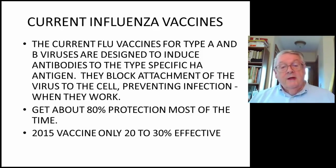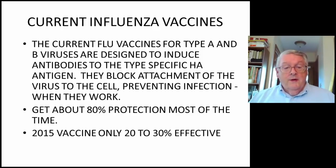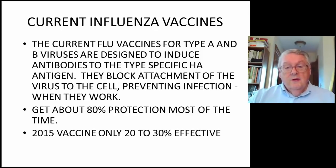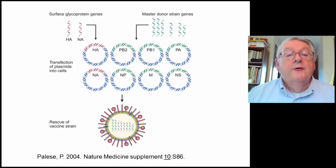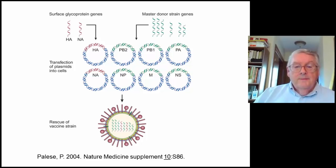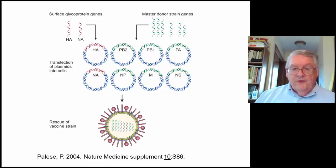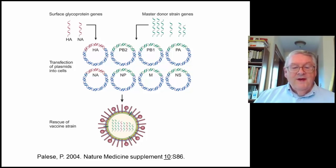The current flu vaccines of type A and type B viruses are designed to induce antibodies to the type-specific HA hemagglutinin antigen, blocking attachment of the virus to the cell and preventing infection when they work. On a good day, you get about 80% protection, but sometimes it doesn't work at all. The current 2015 vaccine is only 20 to 30% effective, as an example. The first influenza vaccines were developed in the 1940s — they just grew the virus in eggs, inactivated it, and called it the vaccine, but there were all kinds of problems with that.